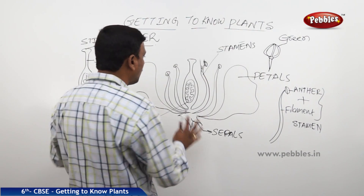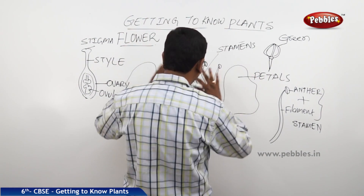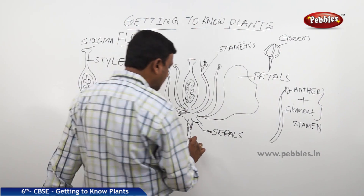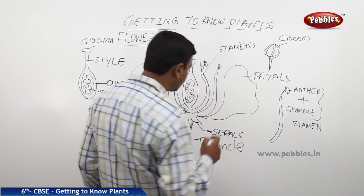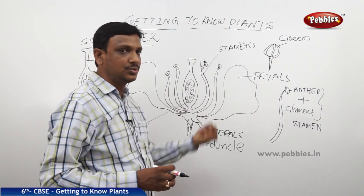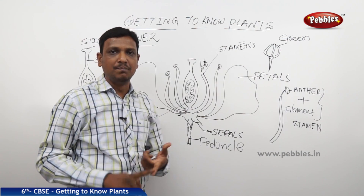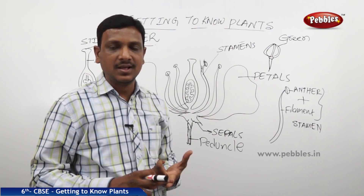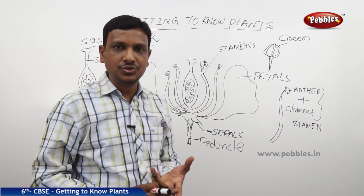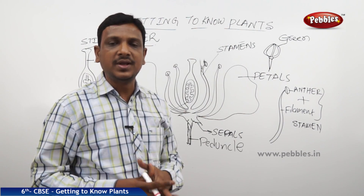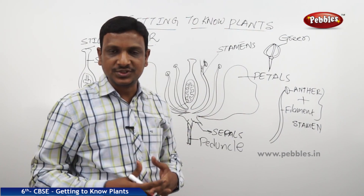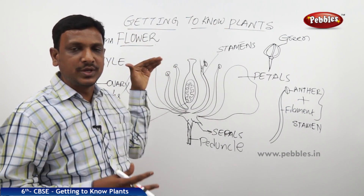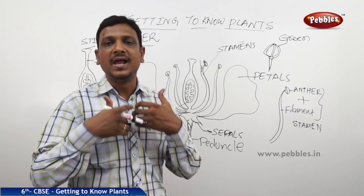We also forgot to mention one important part. All the parts of the flower are connected and held by a stalk called the peduncle. This is the one to which all the flower parts are attached. So we have seen the importance, functioning, and structure of the different parts of the plant. We began with the stem, leaf, root, and flower. In higher classes, you will study other parts like fruits and buds.